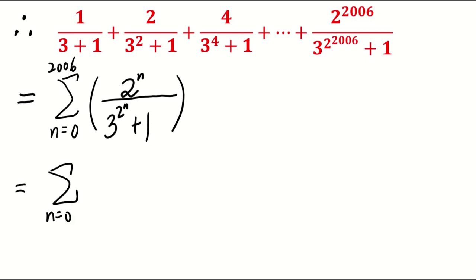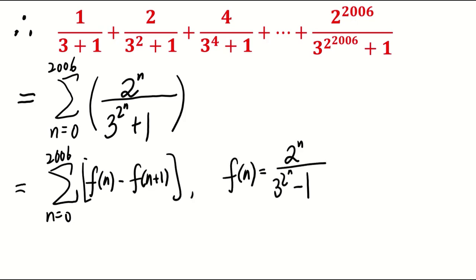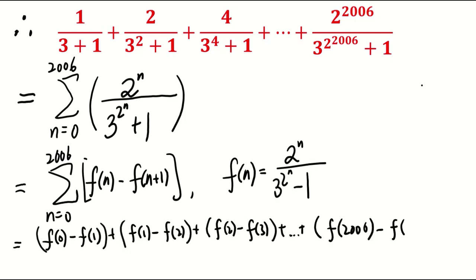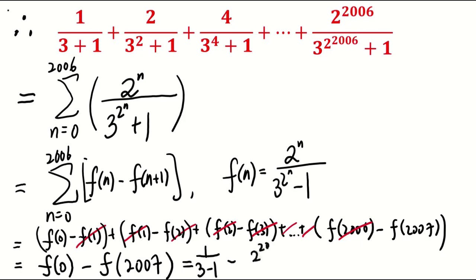Since the general term is f(n) minus f(n plus 1), for the specified f(n), the summation simplifies to f(0) minus f(2007), which equals half minus 2 to the power of 2007 over 3 to the power of 2 to the power of 2007 minus 1.